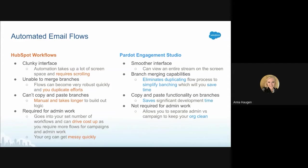In HubSpot workflows, it is required for admin work, and this goes into your set number of workflows and can drive up costs as you're required to use more flows for campaigns and admin work. It also gets messy very quickly, so you have to have a very solid naming convention if you want to be able to find your flows later. While in Pardot Engagement Studio, it's not required for admin work — you can do it, but it's not necessary — so you're allowed to separate your admin versus campaign flows, which really helps keep your org clean.